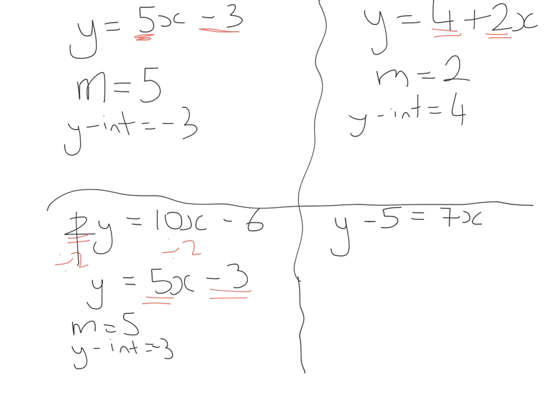Last example we want our equation to be again in the form y equals mx plus c so I need to get rid of this minus 5 so I'm going to plus 5 to both sides so therefore y is equals to 7x plus 5 so my slope is going to be equals to 7 and my y-intercept is equals to 5.